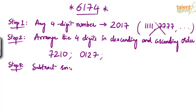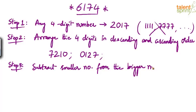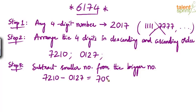Step three: subtract the smaller number from the bigger one. So we compute 7210 minus 0127, and the result is 7083. We now have a new four-digit number: 7083.